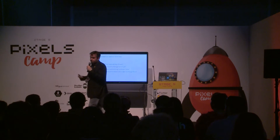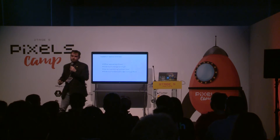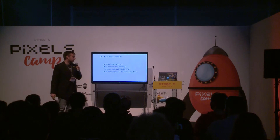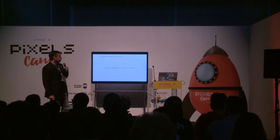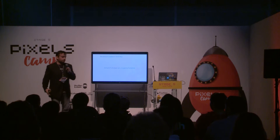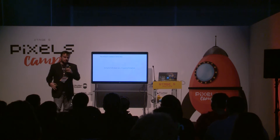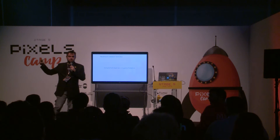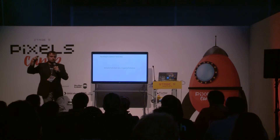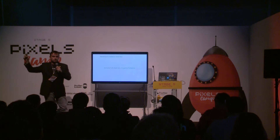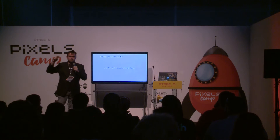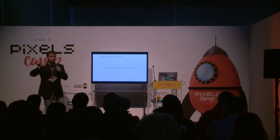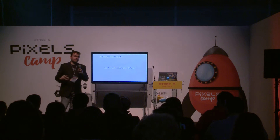You end up with tests that you have to maintain that are duplicated. So enter property-based testing. For property-based tests, instead of testing specific instances — like if one goes in, one comes out; if three goes in, fizz comes out; if five comes in, buzz comes out — you test the general behavior.